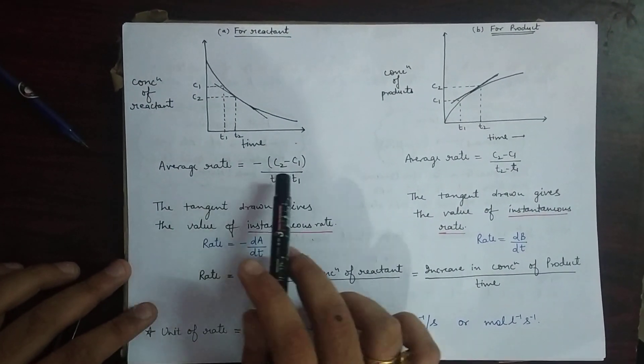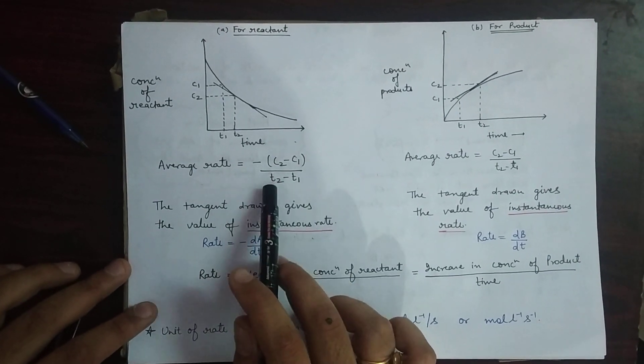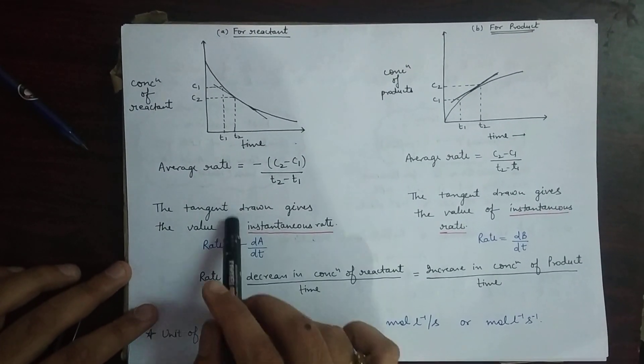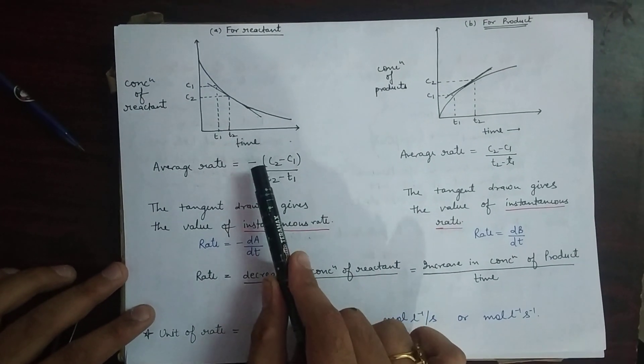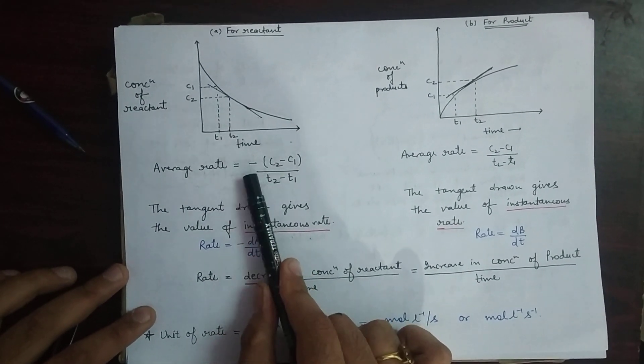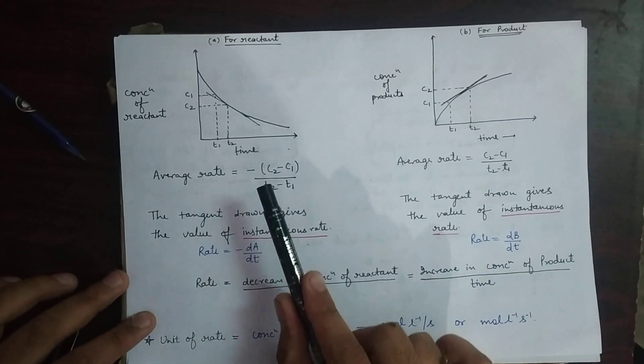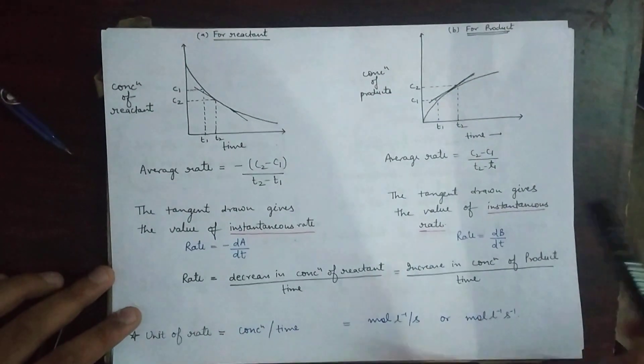The average rate is given by C2 minus C1 upon T2 minus T1. This minus sign indicates the decrease in the concentration. What does it indicate? It indicates the decrease in concentration of reactant.